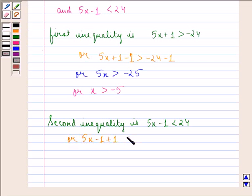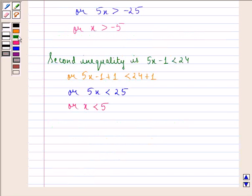This can be further written as 5x is strictly less than 25, or x is strictly less than 5. Hence the values of x satisfying both inequalities are given by x is strictly less than 5 and is strictly greater than -5.